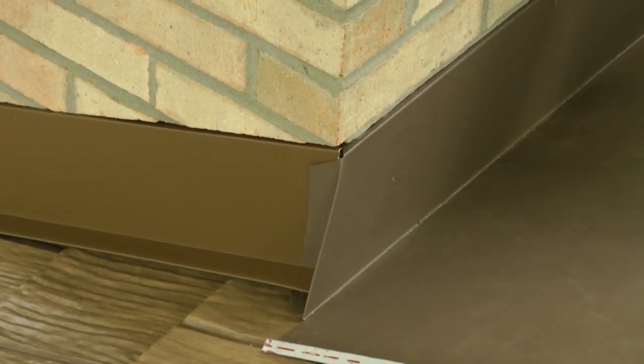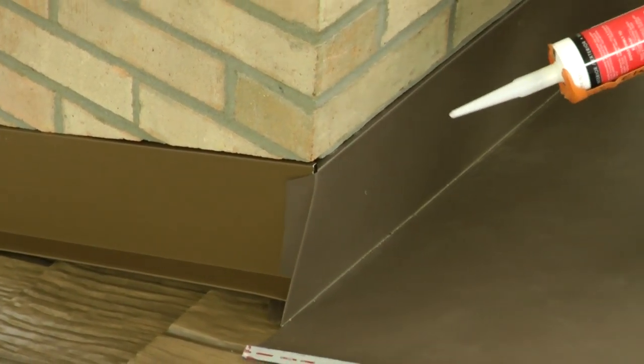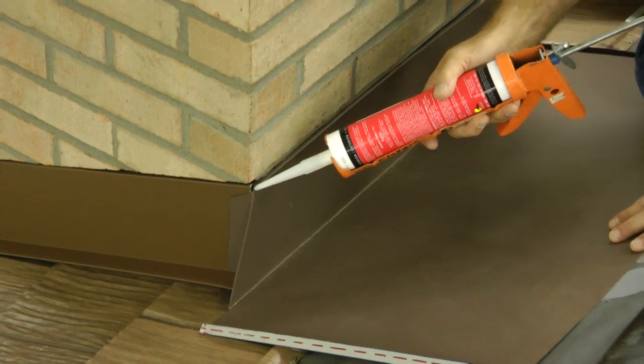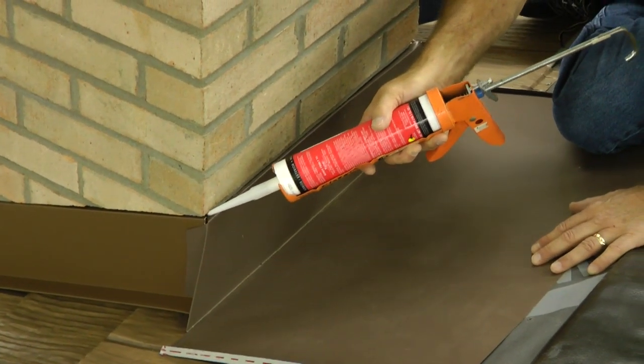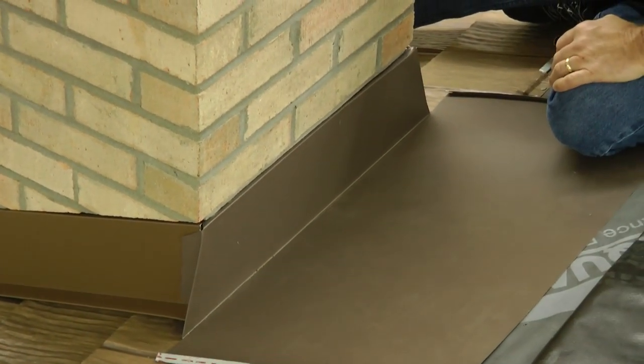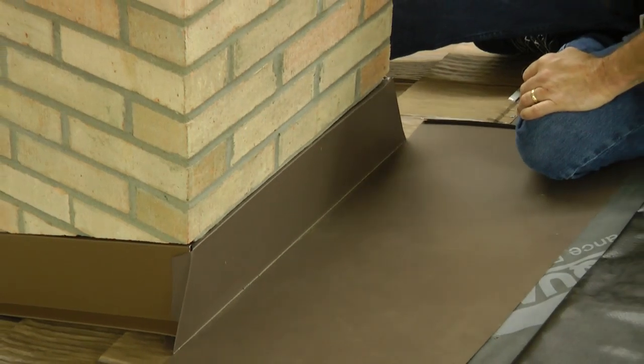That way there's no crack or anything to be sealed right here. The metal seals that intersection. Also I'm going to, once I do install this, make sure that I put a liberal amount of sealant right here where these two come together because that is a potential water infiltration point.